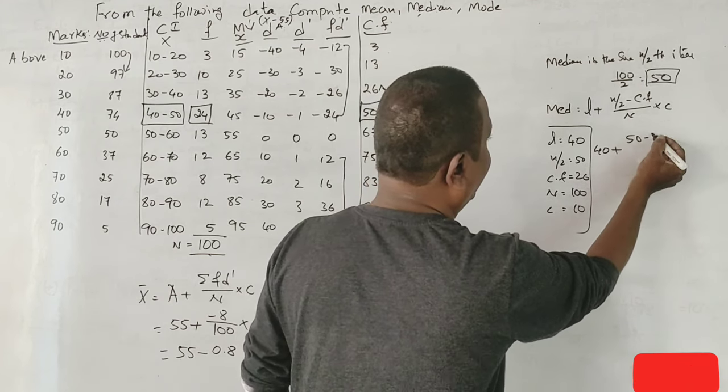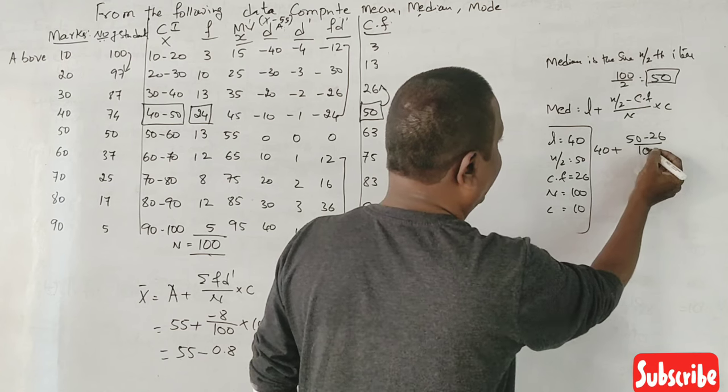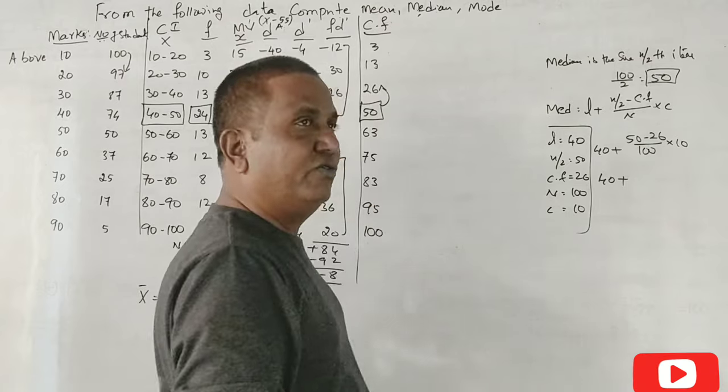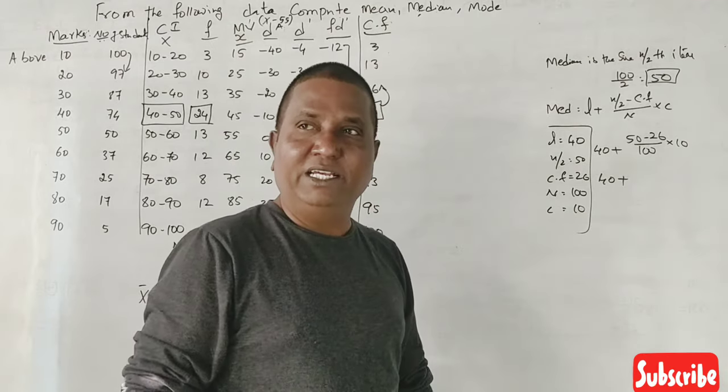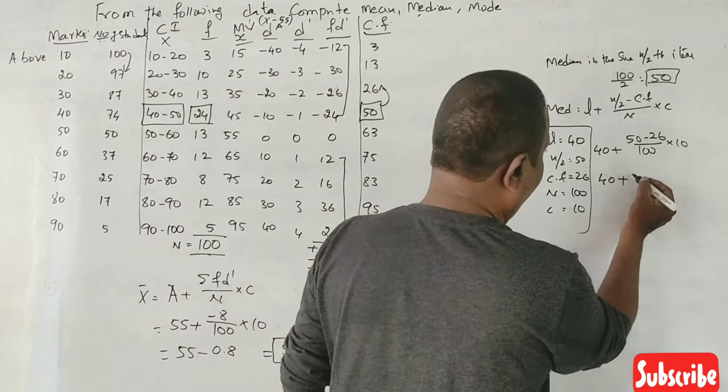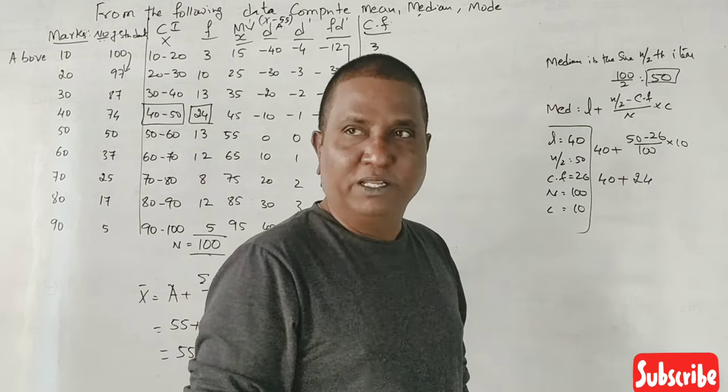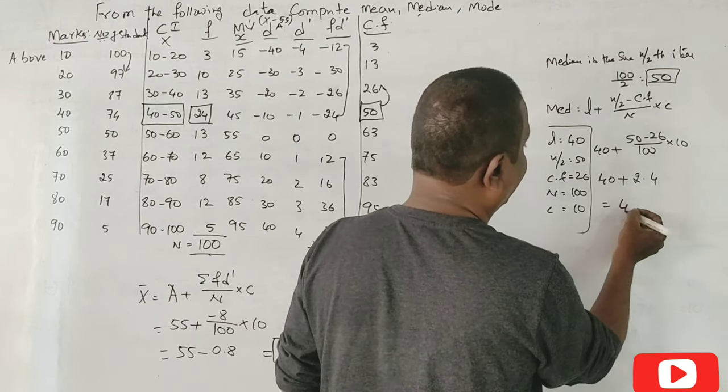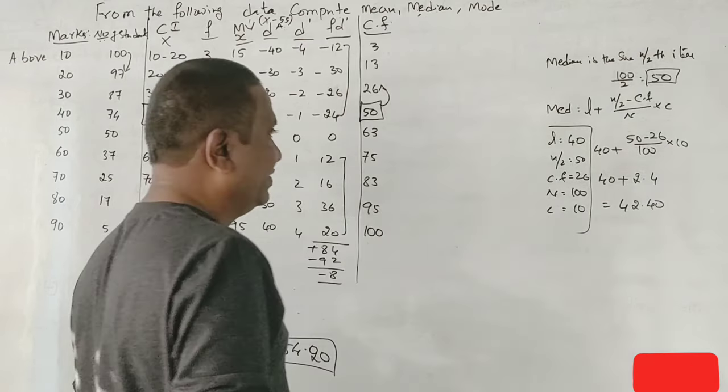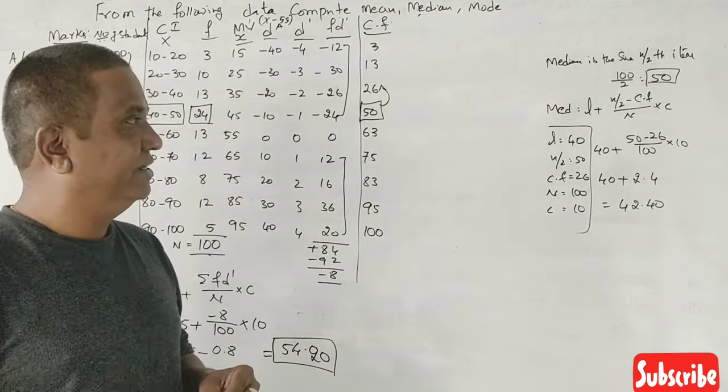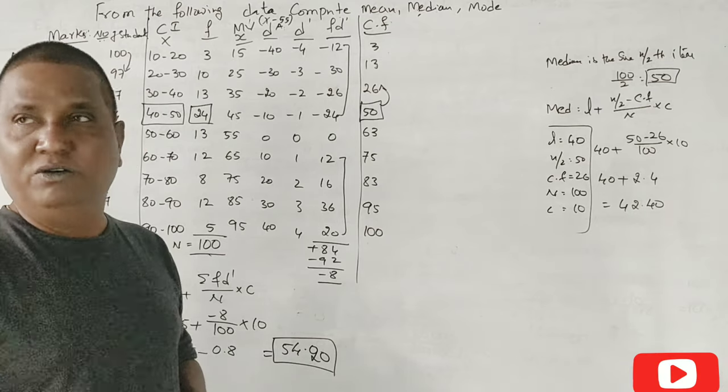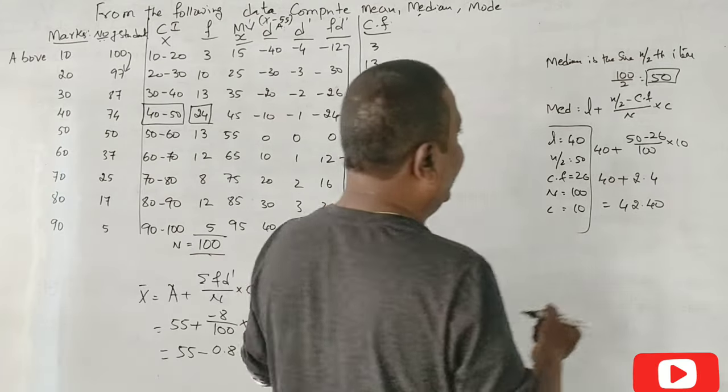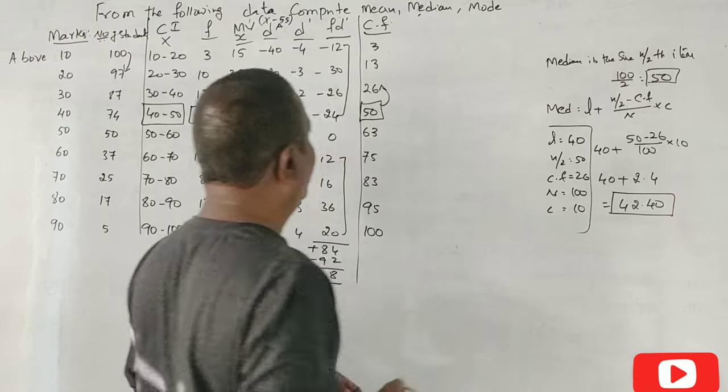N is how much? 40 plus 50 minus 26 divided by 100 into 10. This is 40 plus, 50 minus 26 is 24. 24 divided by 100 is 2.4. No, wait. 50 minus 26 is 24. Yes sir. 24 divided by 100, 0.24. 0.24 into 10, 2.4. So what is the median? 42.4.